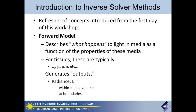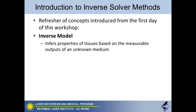For the adding-doubling approach, it's a method that describes the radiance at the boundaries of tissue. As opposed to a forward model, the inverse model takes radiance information — something physical you can measure — and tries to infer what parameters within the model could generate that: what are the optical properties within the tissue based on what you get out of it.